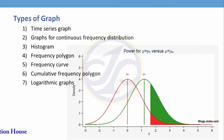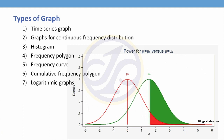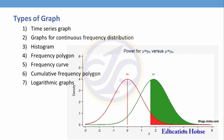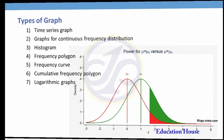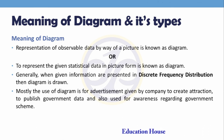Types of graphs include: time series graph, graph for continuous frequency distribution, histogram, frequency polygon, frequency curve, cumulative frequency polygon, and logarithm graphs.